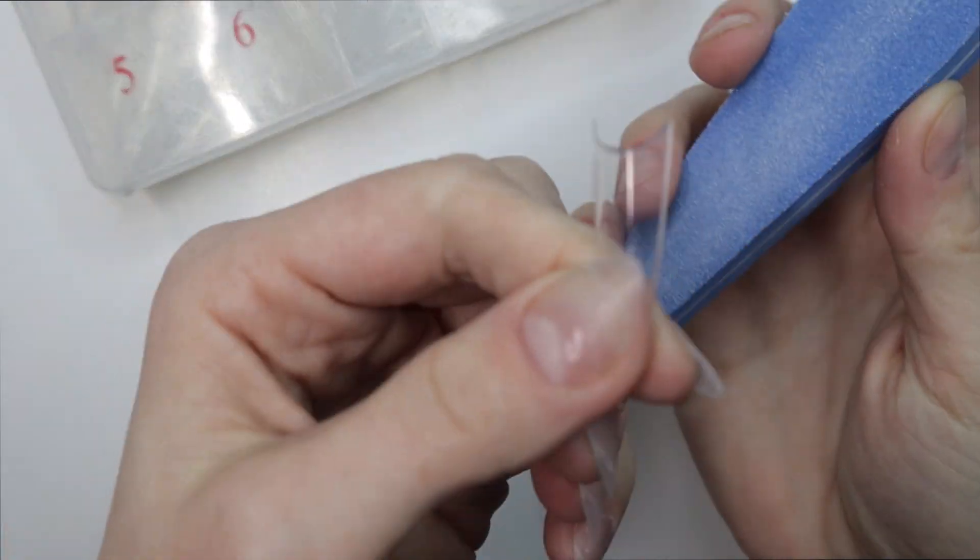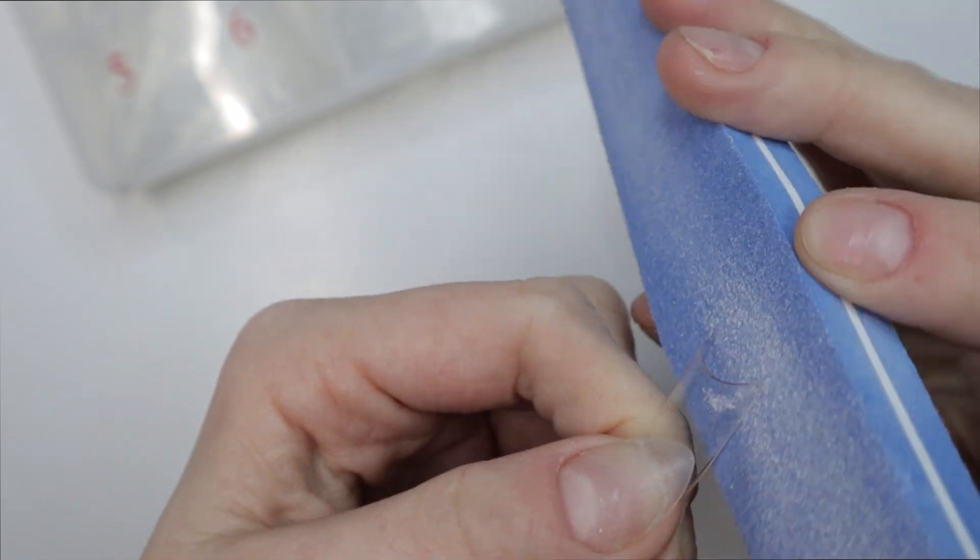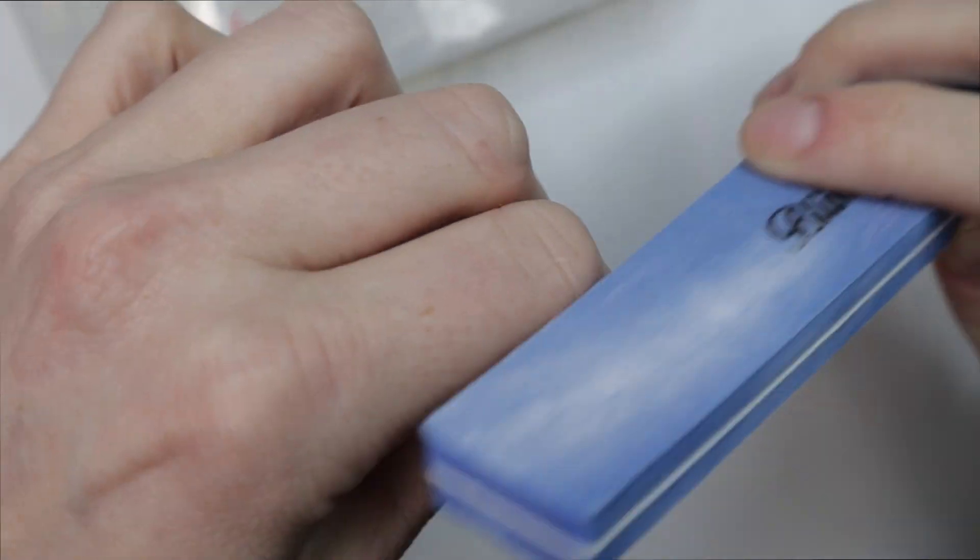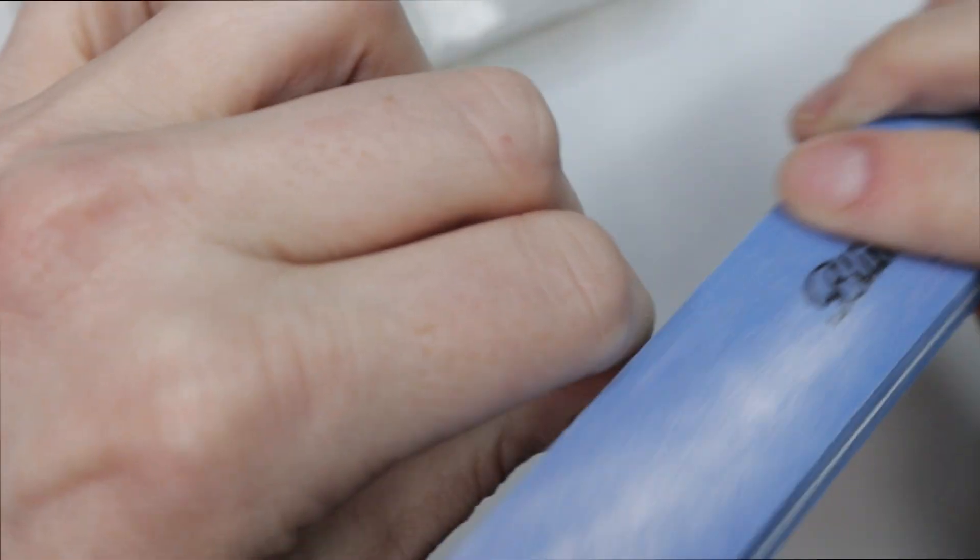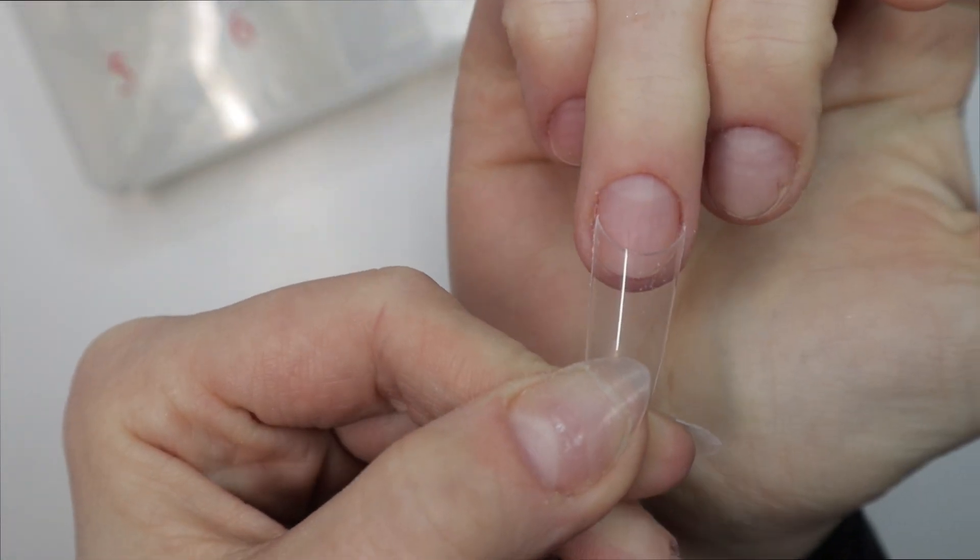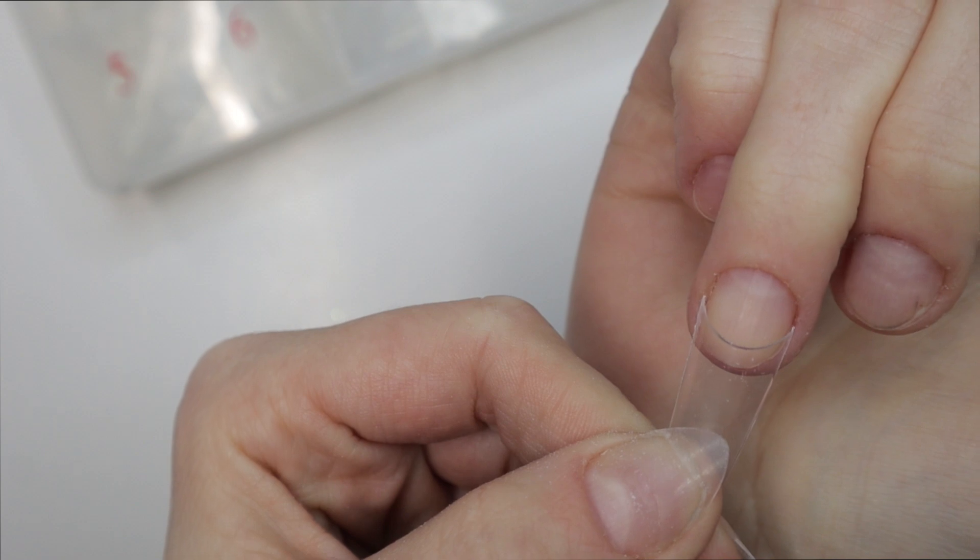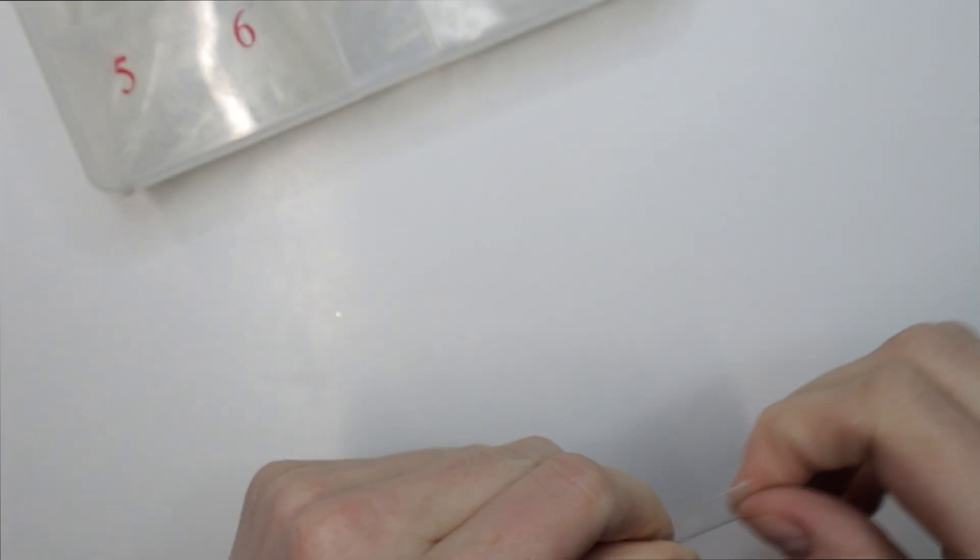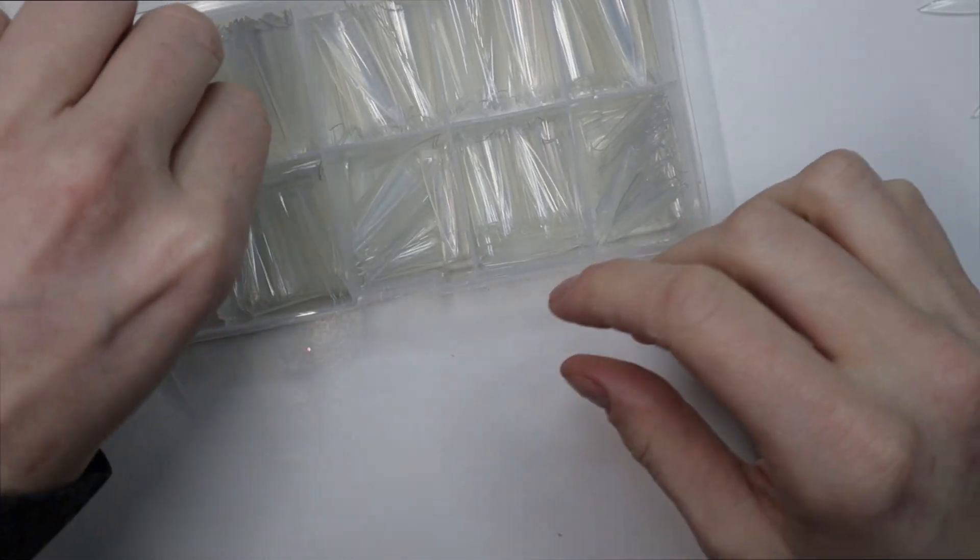How you get the larger sizes to fit is you take a hand file and you just smooth out the right and left hand side until it fits properly to where it fits perfectly. It's not too large and it's not too small. If it's too large or too small you risk it popping off and looking unnatural.